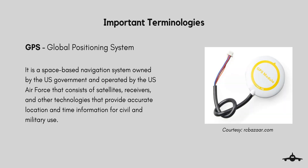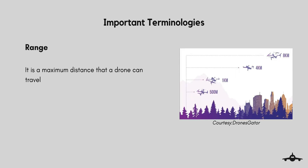GPS — Global Positioning System — is a space-based navigation system owned by the U.S. government and operated by the U.S. Air Force. It consists of satellites, receivers, and other technologies that provide accurate location and time information for civil and military use.